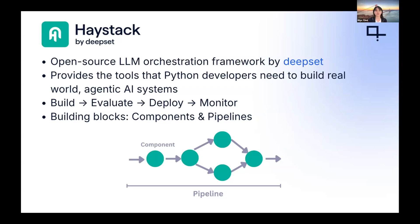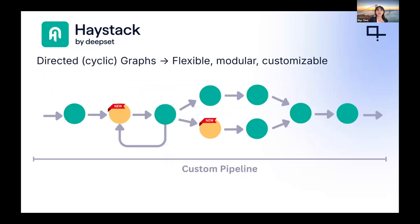Haystack takes its power from its building blocks — components and pipelines. Components are the smaller unit; each of them has only one functionality, such as creating embeddings, generating text, pre-processing your files, or evaluating your retrieval by calculating recall, context relevancy, or faithfulness. By connecting components to each other, you form pipelines. Pipelines in Haystack are directed graphs, and this gives you a lot of flexibility to control how your data flows through your application with branches and loops.